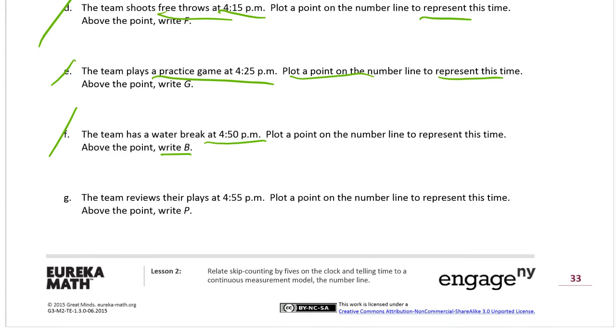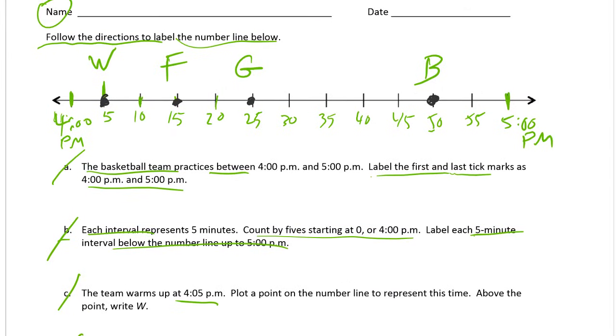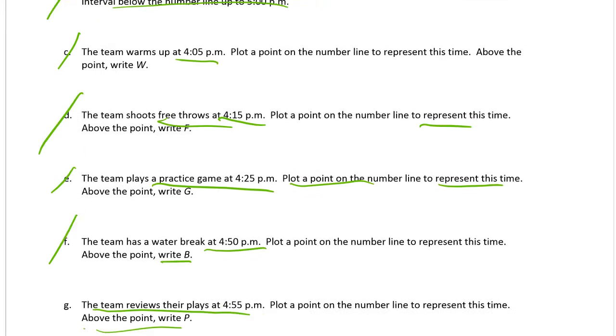And G. The team reviews their plays. So review means they're just reading them over again or practicing them or talking about them. Reviewing means going over them again. They're reviewing their plays at 4:55. Plot a point on the number line to represent this time. Above the point, write a P. So 4:55 is going to be P for plays. There's the 55. And that's going to be P for plays. And we're done with G.